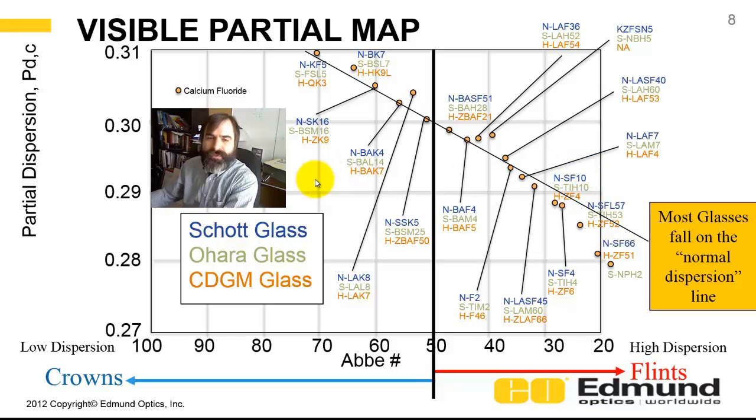So here's a partial, a visible partial glass map, and it's similar to the regular glass map. In the horizontal axis, it plots the dispersion, or the reverse of the Abe number. So high Abe at the left, low Abe at the right, and again, high dispersion on the right. The vertical is partial dispersion. So in this case, we're going from 0.27 to 0.31. And most visible glasses fall on this glass line, or this normal dispersion line. And I've showed a number of materials here, and if they're in multiple catalogs, Schott, O'Hara, and CDGM, I'm showing what these different glasses are.